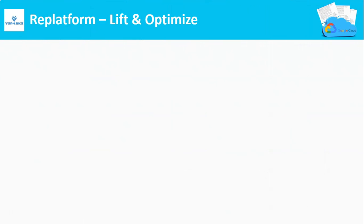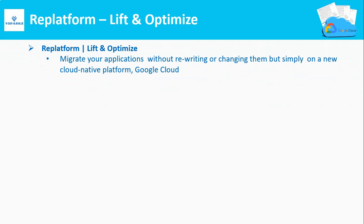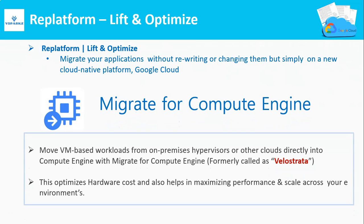The second type of migration is Replatform, also termed as Lift and Optimize. Moving your applications and servers to Google Cloud without rewriting your code, but with a different underlying cloud-native platform, is called Replatform. There is a product called Migrate for Compute Engine, formerly called Velostrata, that moves your on-premises VM workloads or any other cloud VM workloads to Google Cloud Compute Engine for hardware optimization. In this scenario, the underlying platform is changed, but there are no changes to your application code.